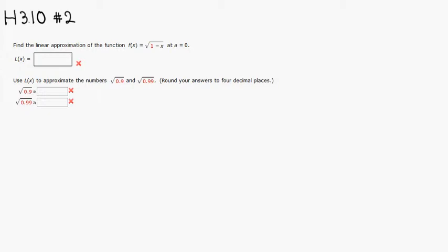First we want to find f of 0. So f of 0 would be square root of 1 minus 0, which is going to be square root of 1, so it's going to be 1.